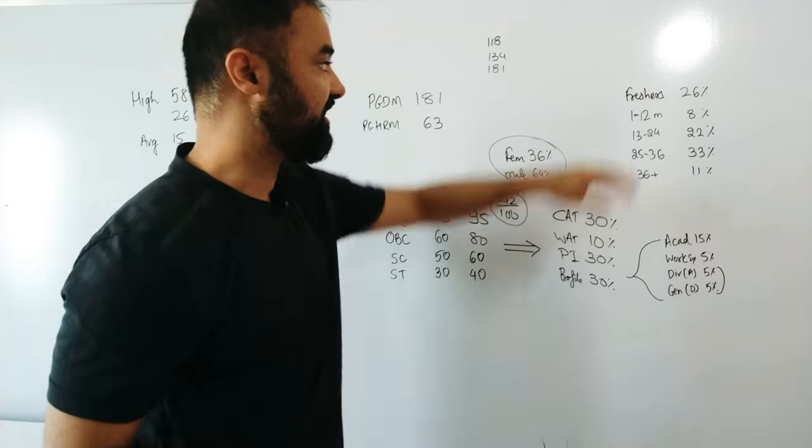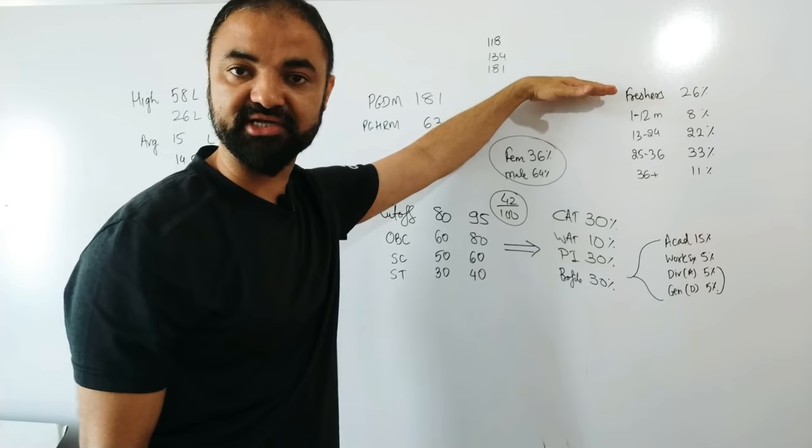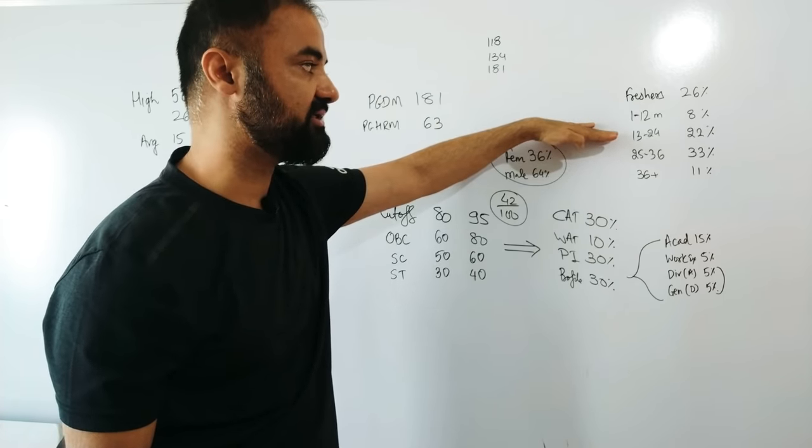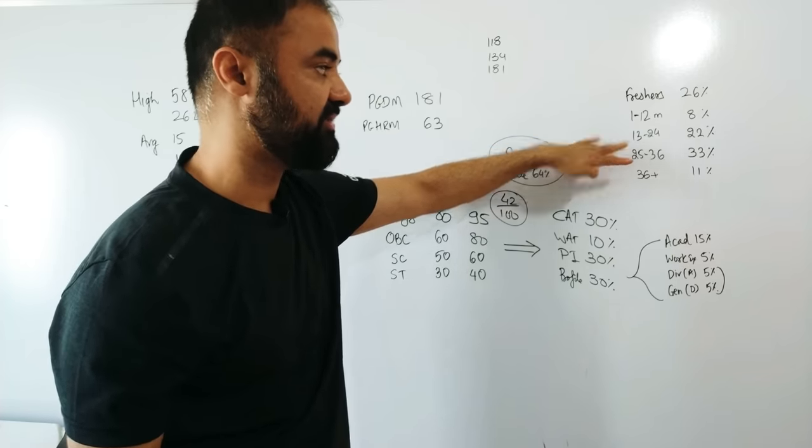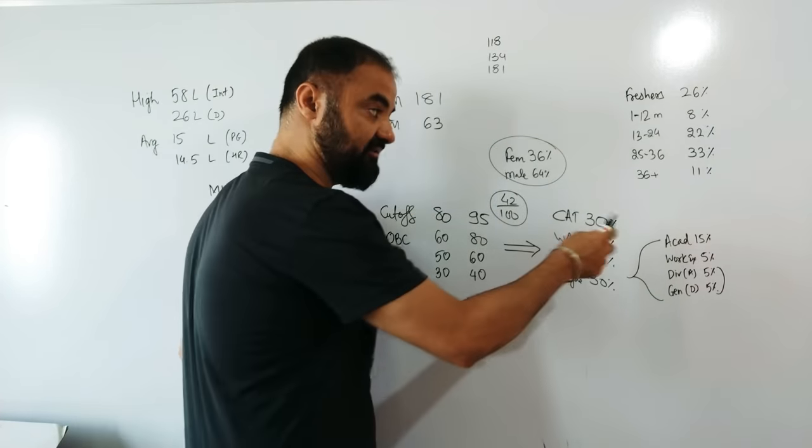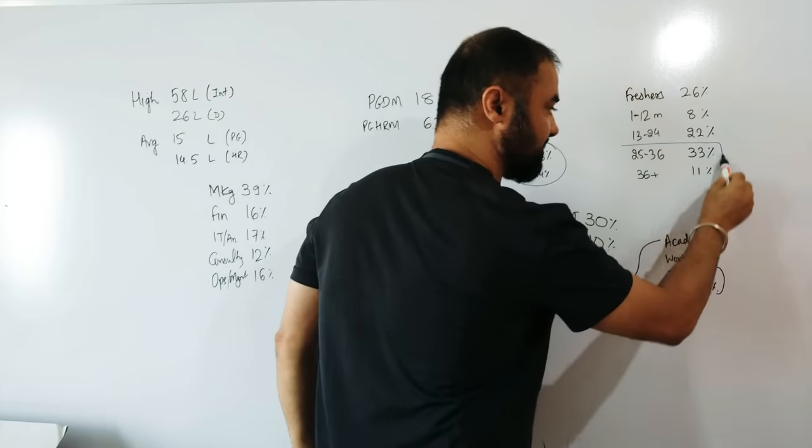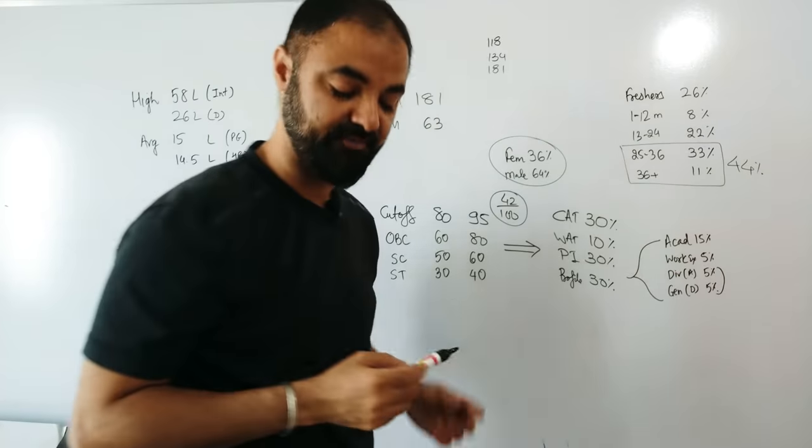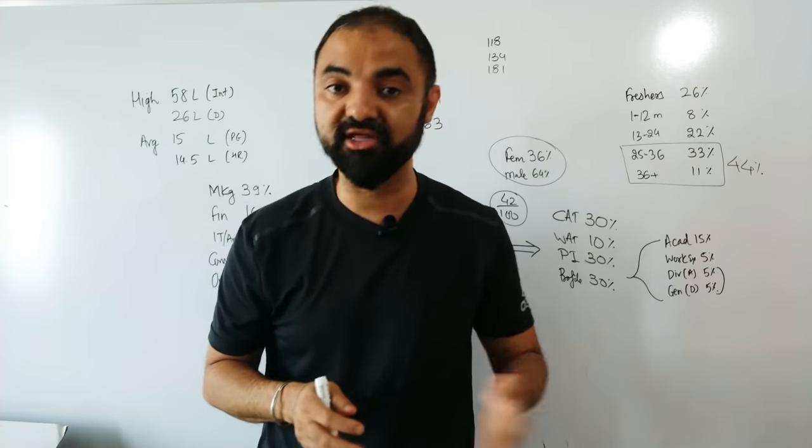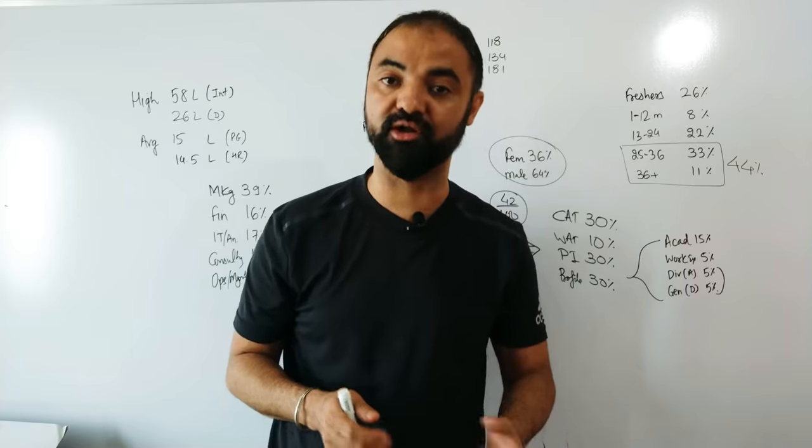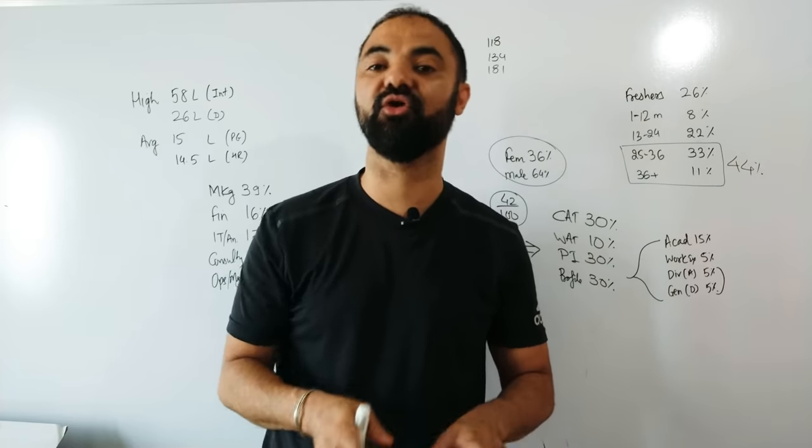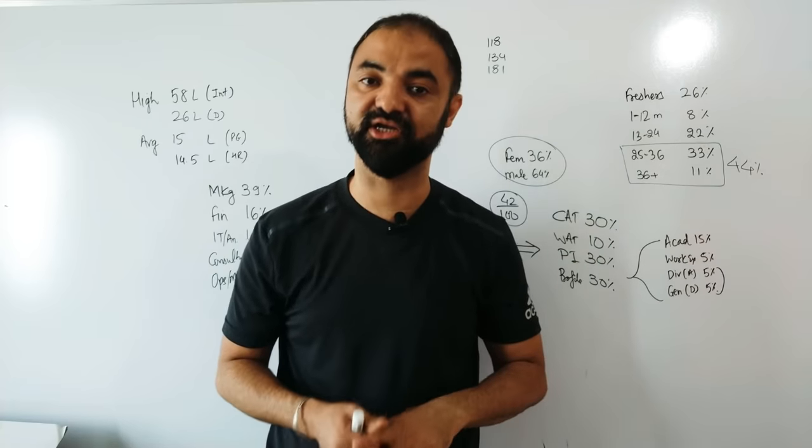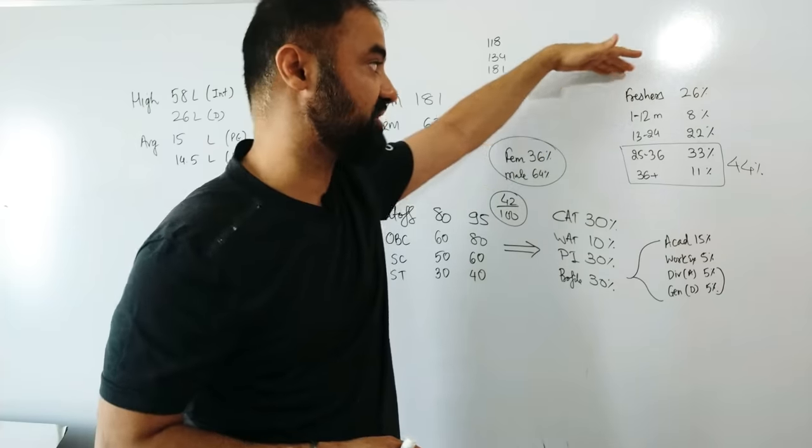Freshers with zero work experience are 26%, 1 to 2 years 8%, 13 to 24 months 22%, 25 to 36 months 33%, and 11% have more than 36 months of work experience. If I combine them up, 44% of people have work experience of more than two years. This is for students who tell me they are already too old for MBA. Almost half of the batch has work experience of more than two years.